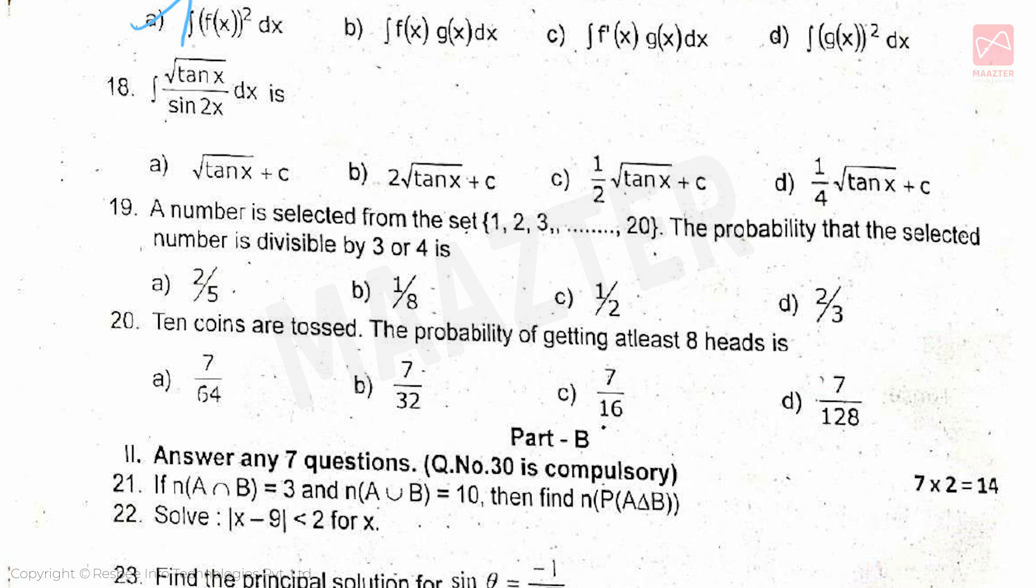If integral f(x)dx = g(x) + C, then integral f(x) · g'(x)dx, answer is option A. Next, integral √(tan x)/sin(2x) dx is, answer is option A. Next, a number is selected from the set {1, 2, 3, ..., 20}. The probability that the selected number is divisible by 3 or 4 is, answer is option C. Next, 10 coins are tossed, the probability of getting at least 8 heads is, answer is option D.